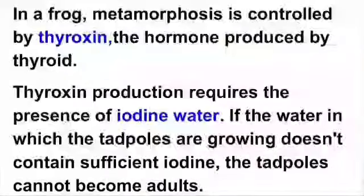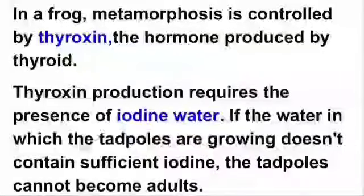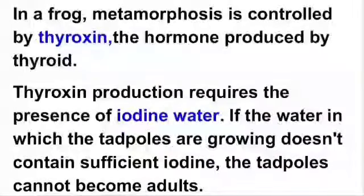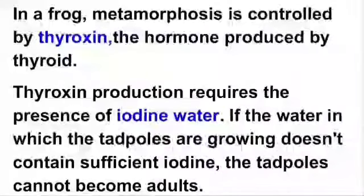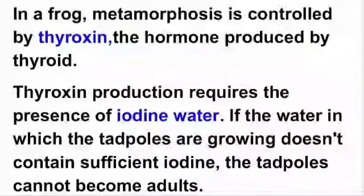Thyroxine production requires the presence of iodine in water. The thyroxine hormone is produced only when iodine is present in the water. If there is no iodine in the water, the thyroxine hormone cannot be produced. So, if the water in which the tadpoles are growing does not contain sufficient iodine, then the tadpoles cannot become adults. This is the reason that water needs to contain sufficient iodine.